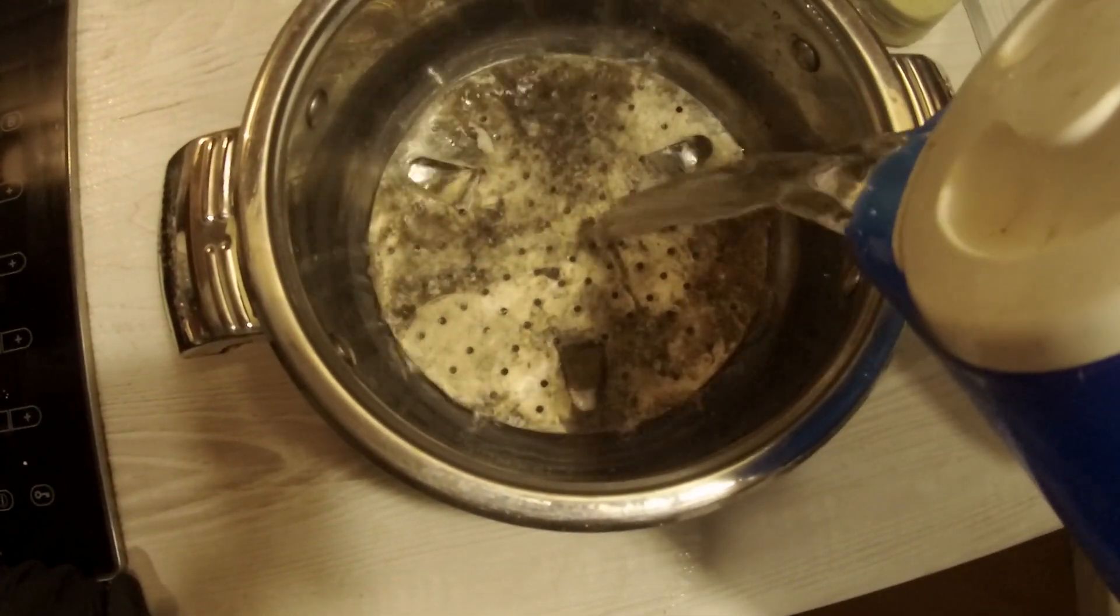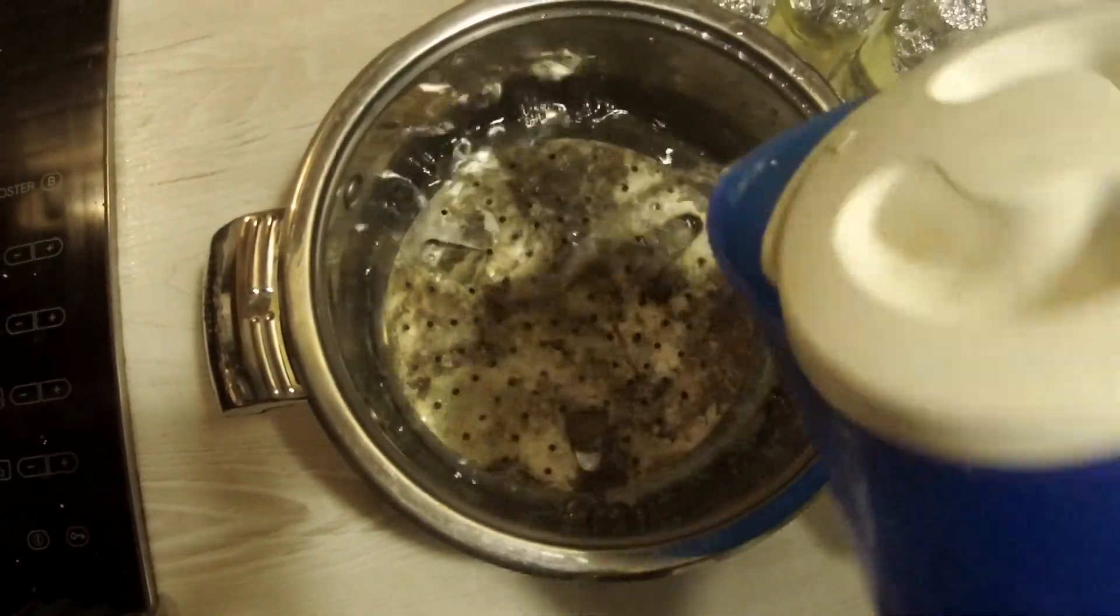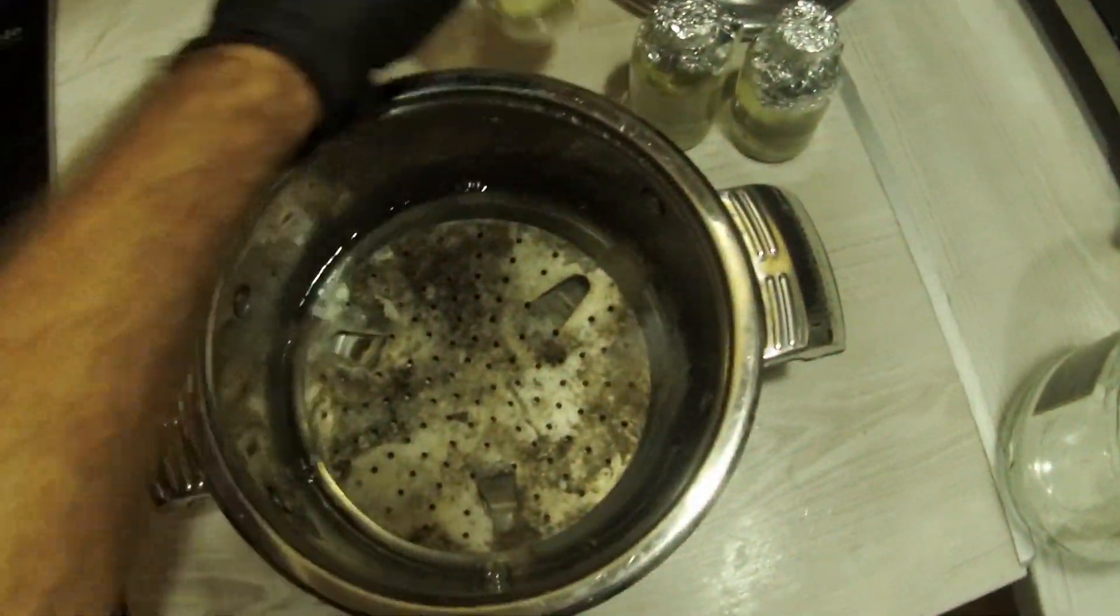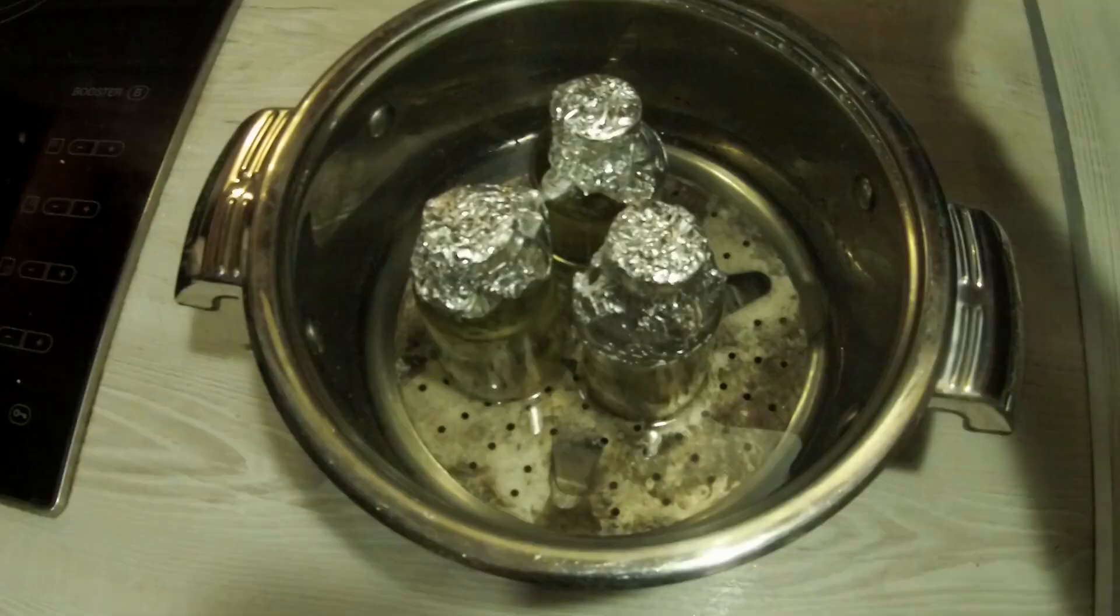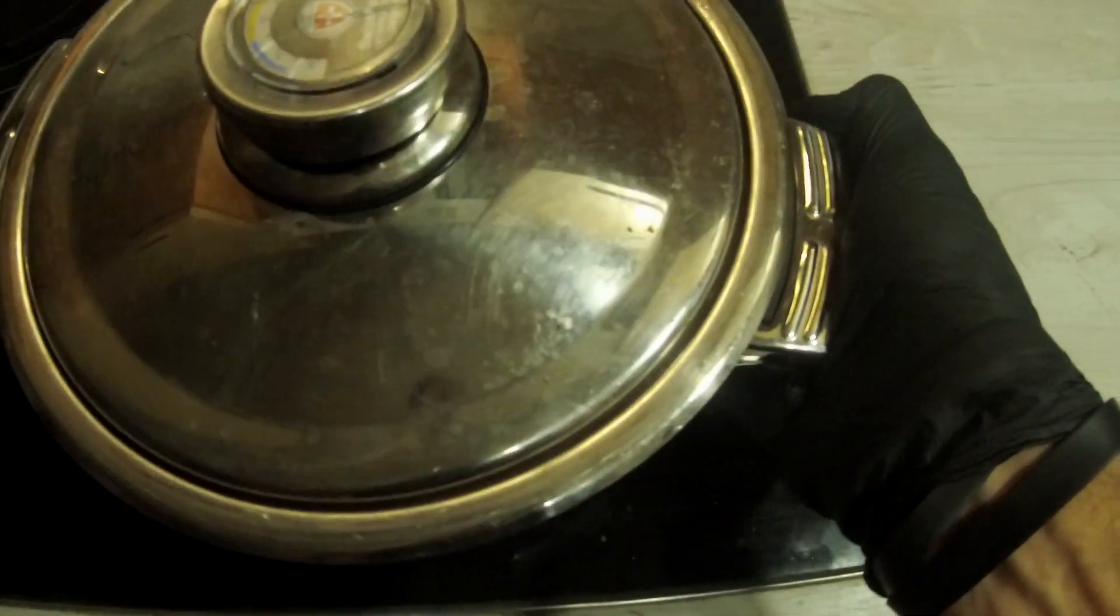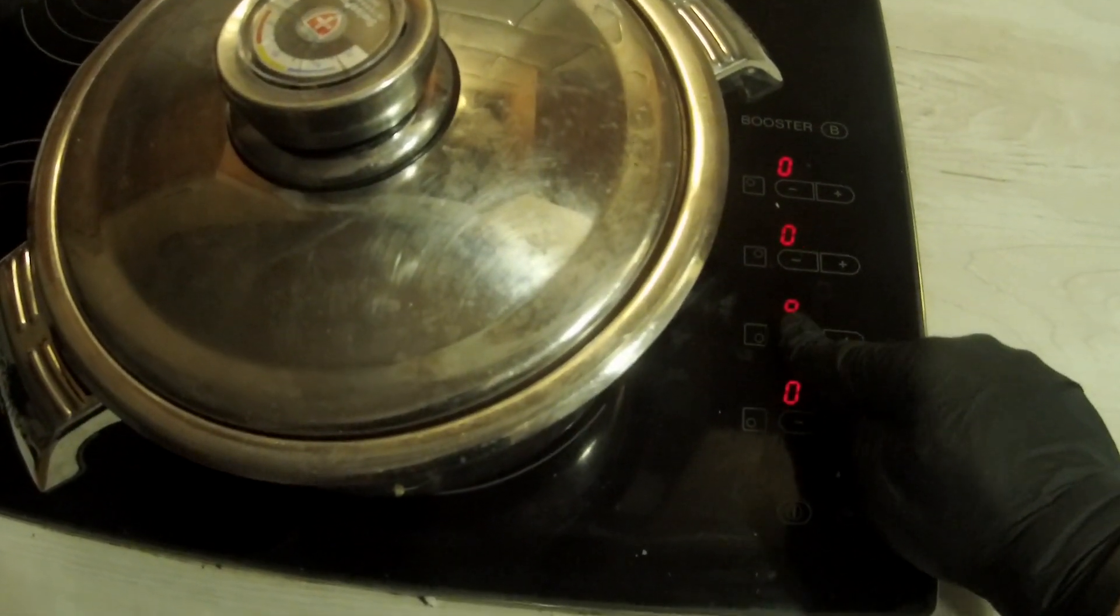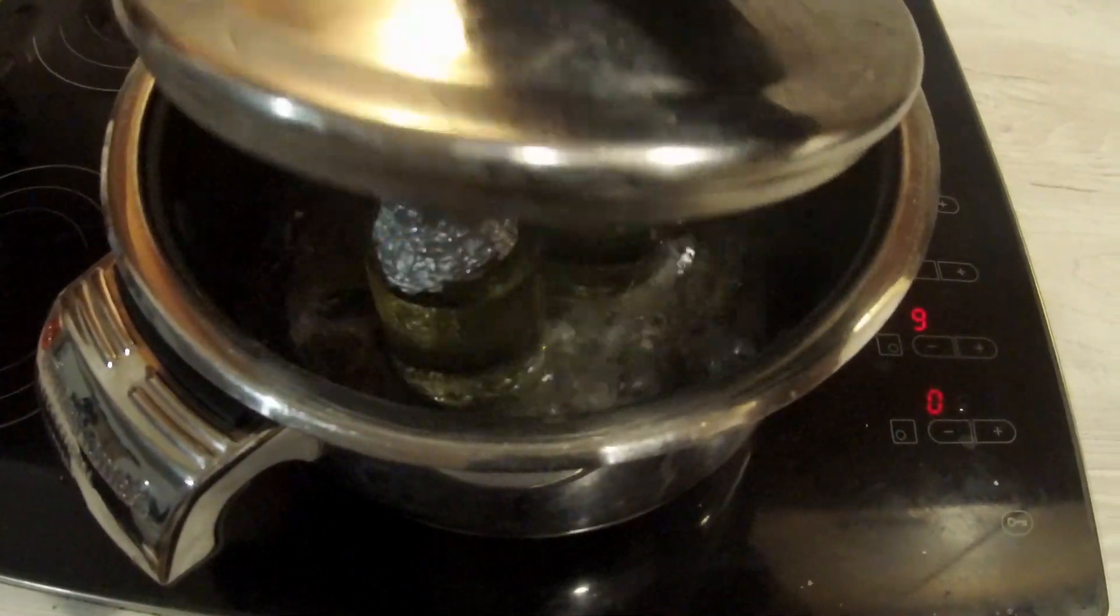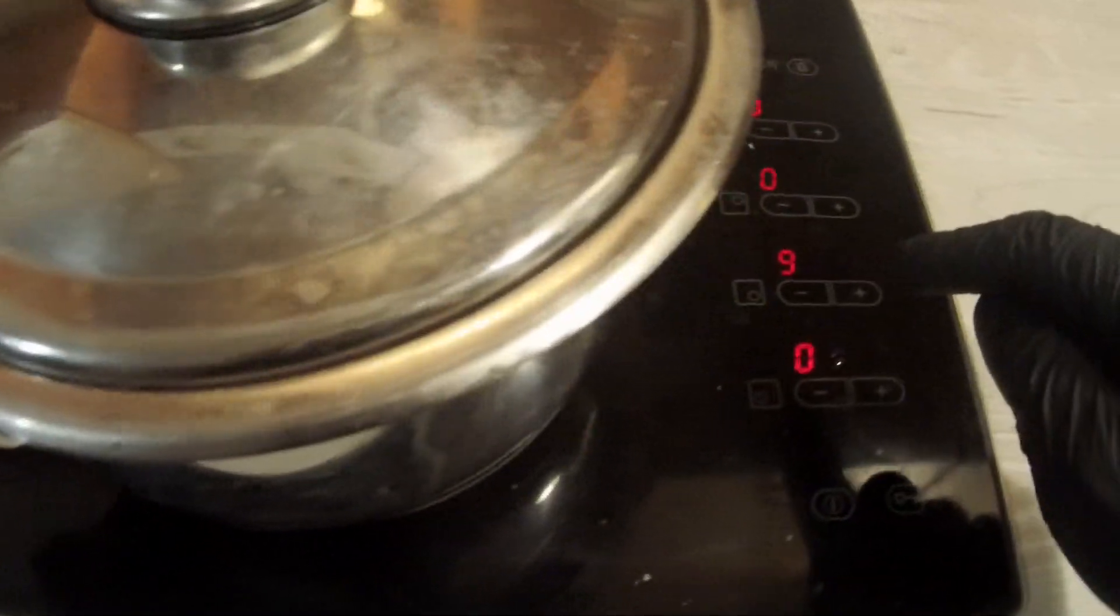We will put the vials inside our sterilization vessel. Then we will add enough water to cover the vials between one-fourth and one-half of their height. As soon as the water starts to boil, we will turn down the heat to a simmer and start our 15 minutes countdown.